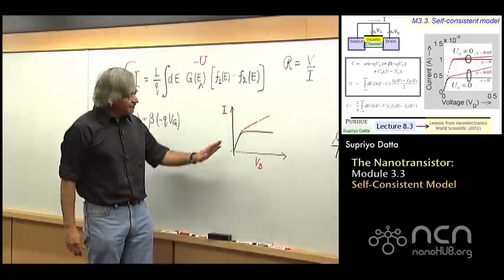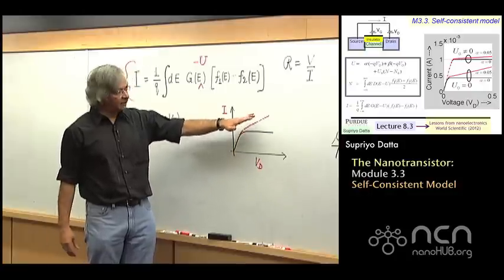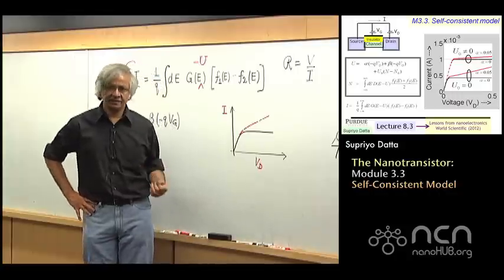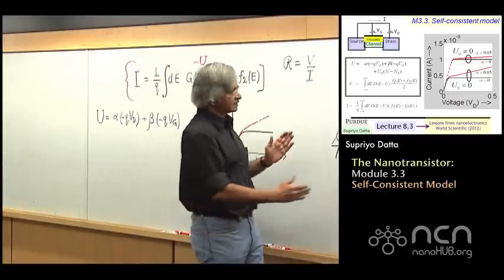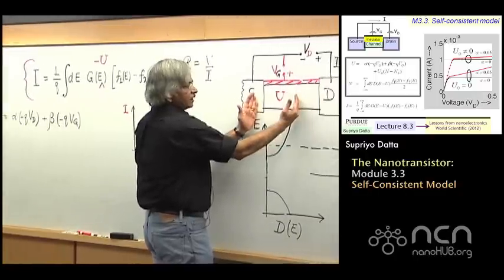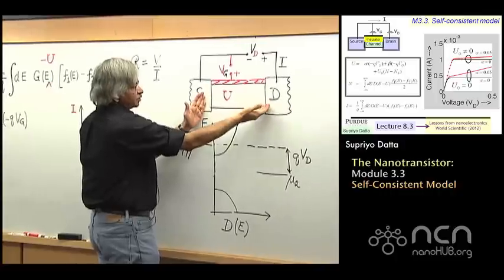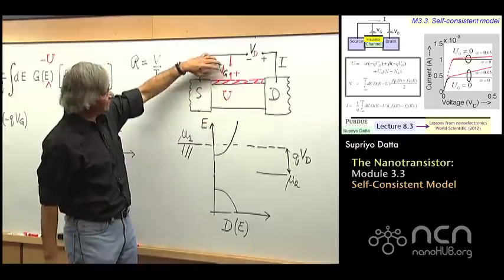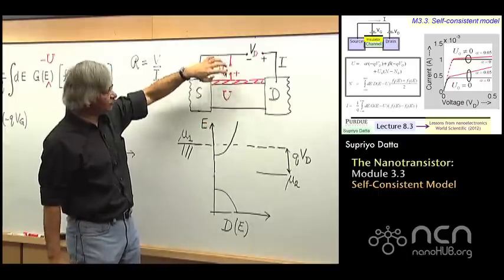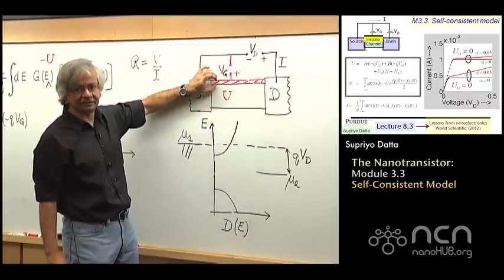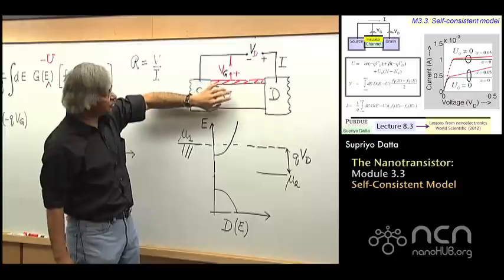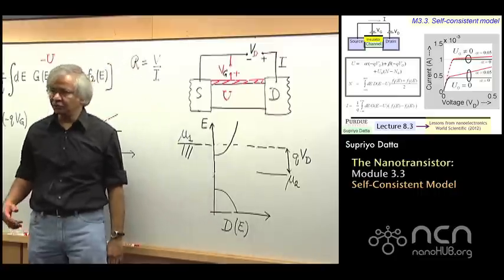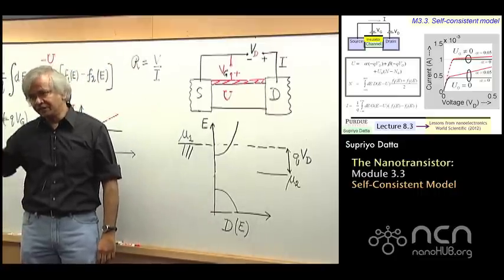Actually this increase is a problem that's getting more and more important as you go to smaller devices, because when you go to small devices, that means this length is getting short, and so the drain tends to have a lot more influence on the potential in the channel. In order to make sure the gate has more influence on the drain, one has to make this oxide thinner and thinner so the gate can control the potential more effectively.